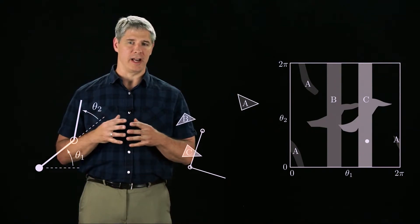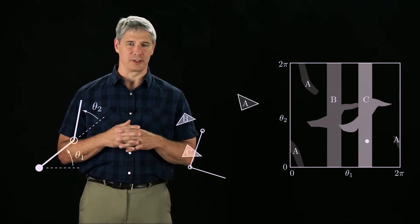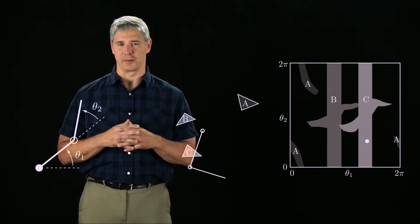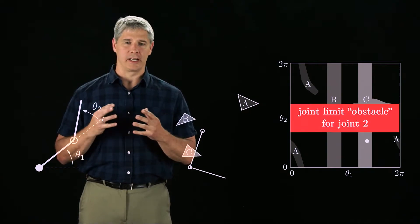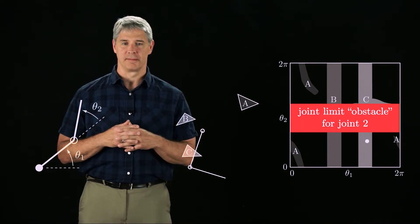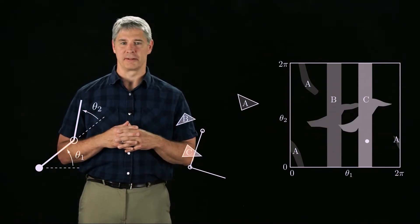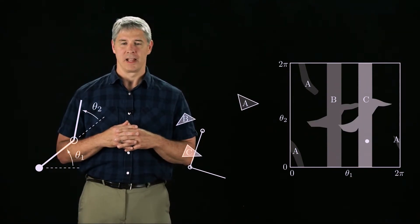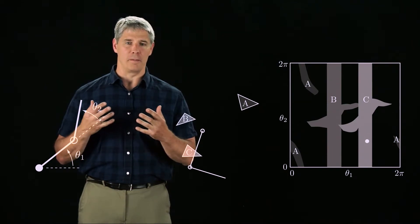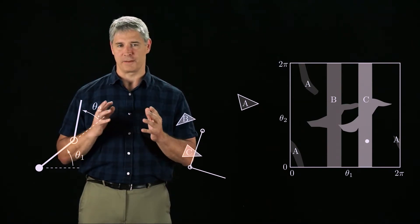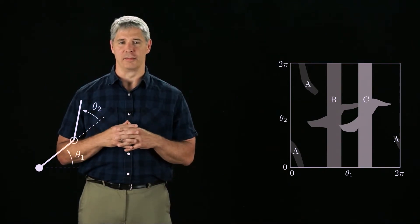If the robot also had joint limits for joint 2 preventing link 2 from rotating over link 1, we'd get another obstacle, this one due to the joint limits. In the rest of this video, we'll assume no joint limits. Now that we've constructed our C-space and its C obstacles, we can perform all motion planning in the C-space, so let's focus on that for a moment.